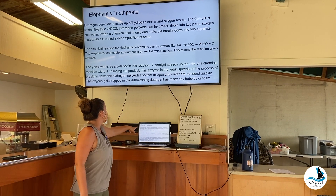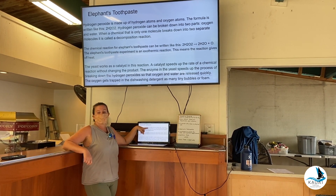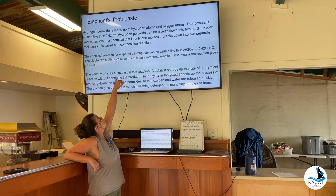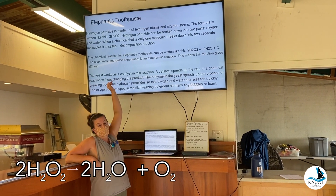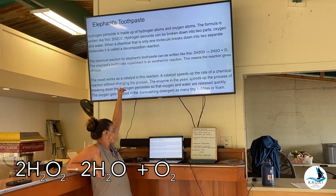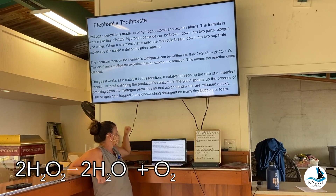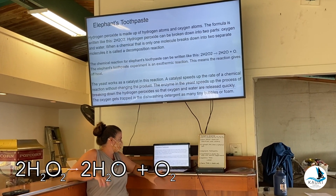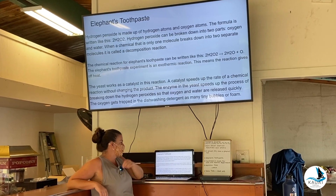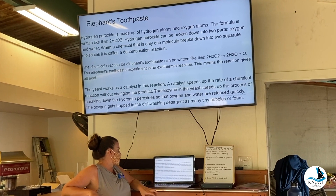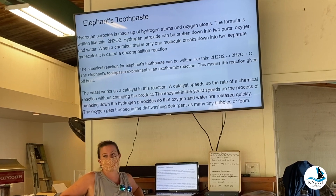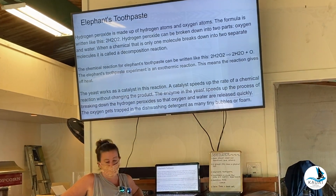The hydrogen peroxide is made up of hydrogen and oxygen atoms. This is the formula: 2H₂O₂ — so that means two hydrogen atoms and two oxygen atoms. It can be broken down into two parts: oxygen and water. When a chemical that is only one molecule breaks down into two separate molecules, it's called a decomposition reaction. So we're decomposing hydrogen peroxide.